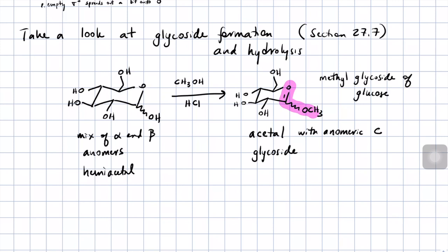The mechanism looks a lot like the mutarotation mechanism. You protonate the OH group on C1. Electrons on the neighboring oxygen kick down and kick off water as a leaving group. Then the alcohol can attack the resulting resonance-stabilized oxonium or oxocarbenium ion either from above or below, and then deprotonation of the positively charged oxygen results in the methyl glycoside.